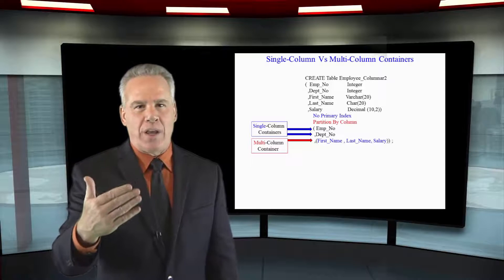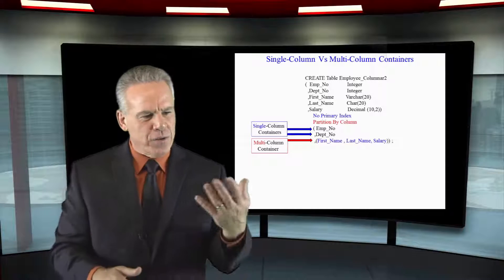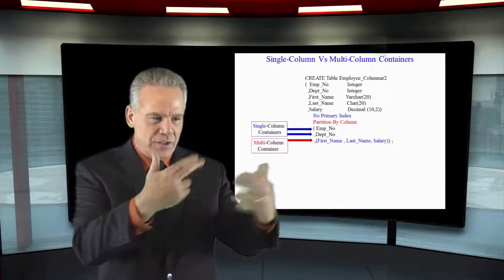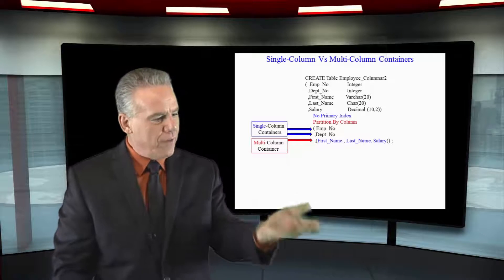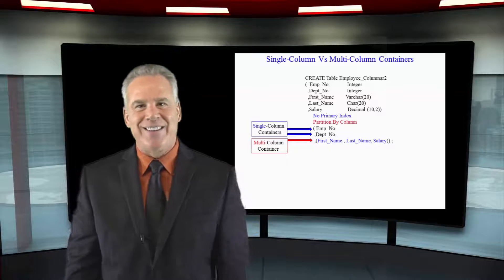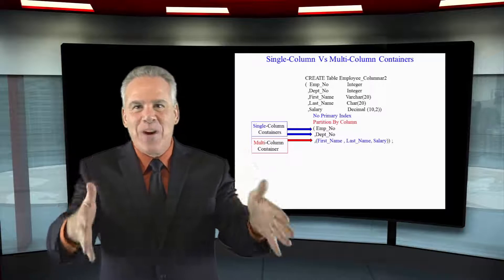Or think of it this way, we might have a table that's got 300 columns. The first five are queried somewhat interchangeably the most often and we could actually have the first five as their own containers and then the other 295 in one big container.